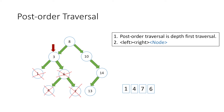Moving up to node 3, its left and right have both been fully traversed, so we print its value which is 3 and mark it as traversed. We move up to node 8. Its left side is all traversed, so according to the rule we move in the right direction to node 10.